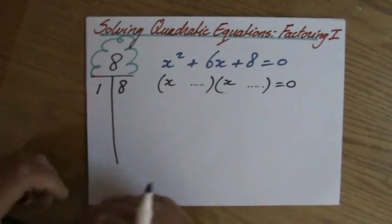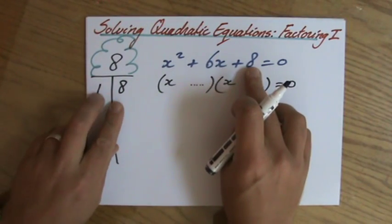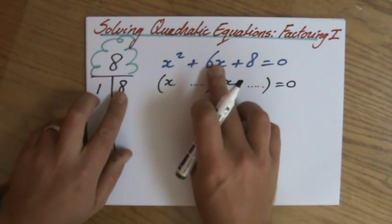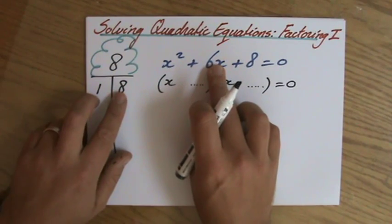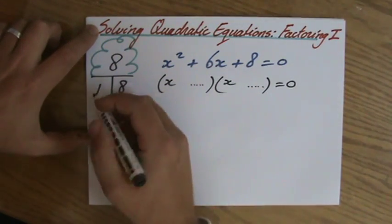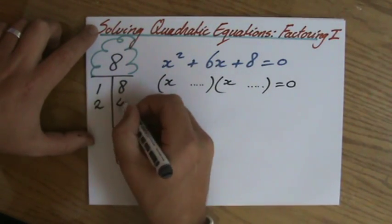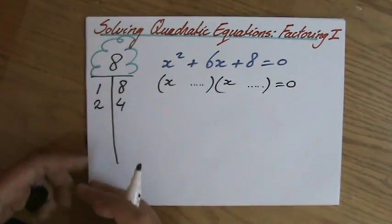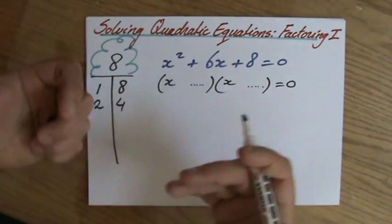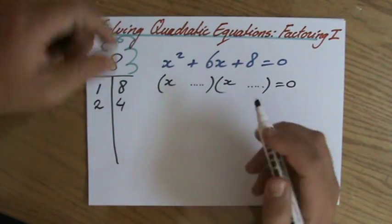1 times 8 is 8. Those are two factors. With a 1 and a 8, can I turn it somehow into a 6 if I add or subtract? No, not really. So other factors of 8. 2 times 4. 2 times 4 is 8. With a 2 and a 4, can I turn that into a 6 somehow adding? Yes, I can. Fantastic.